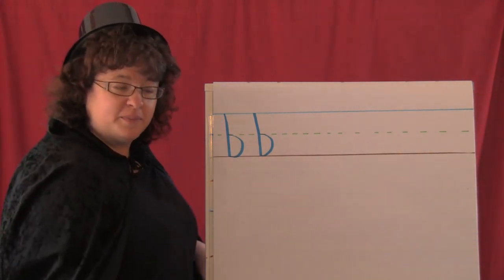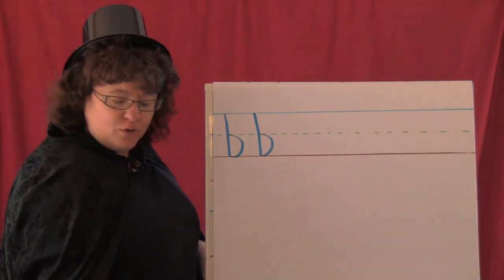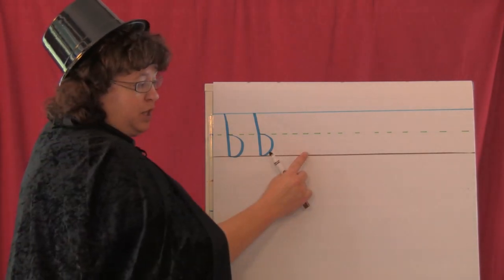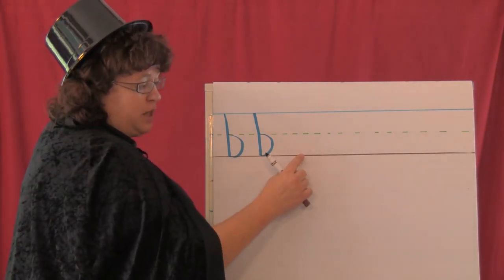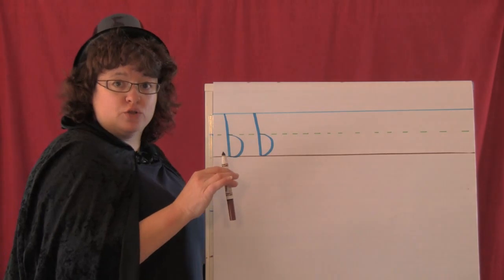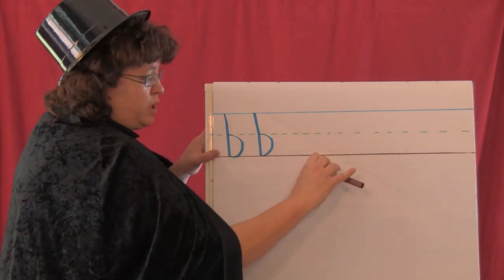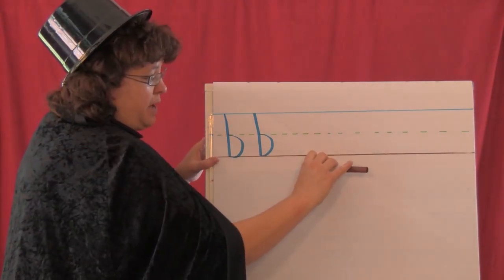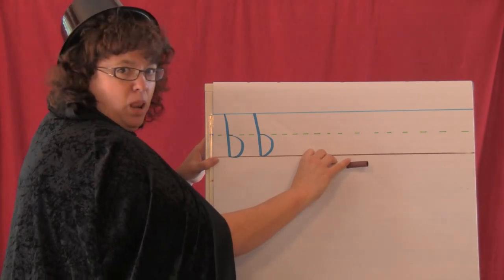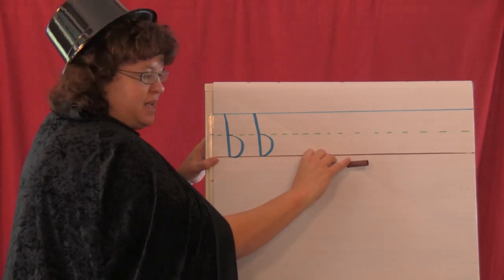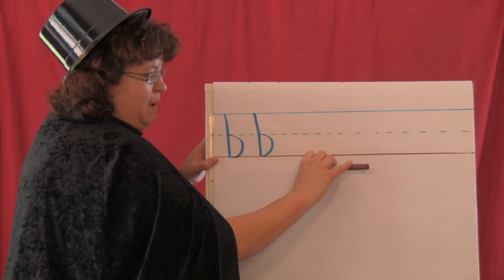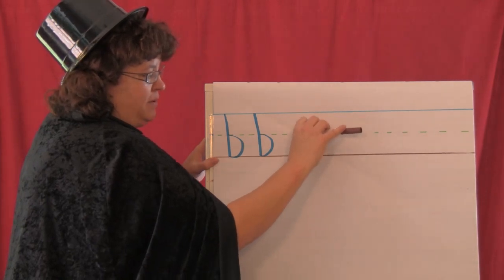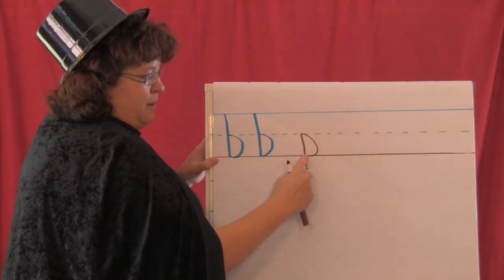P is a root digger because it starts below, it goes below the bottom line. So we're going to use brown. We're going to put our markers down below the dotted line, the bottom line. What's wrong with my mouth today? And we're going to say, big line up, little around, p.